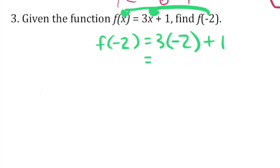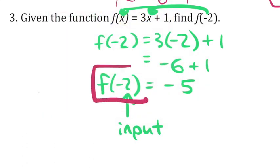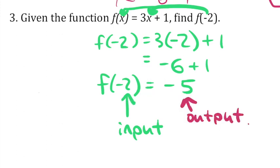When I multiply 3 times negative 2, I get negative 6 and I'll add 1. And now I get negative 5. So my final answer here is f of negative 2 equals negative 5. Where negative 2 was the input and f of negative 2, the output, is negative 5. Our actual answer to this question is just negative 5.